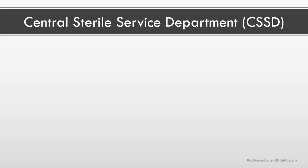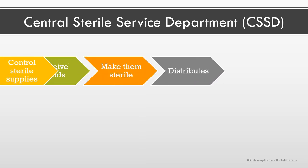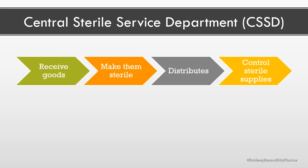Apart from drug distribution, the pharmacy department is also engaged in the supply of sterile goods. The department is named the Central Sterile Service Department. This department receives goods which are likely to be reused, makes them sterile with the help of various sterilization procedures, stores them, and distributes them inside the hospital where needed. The pharmacist also has control over other sterile supplies inside the hospital.